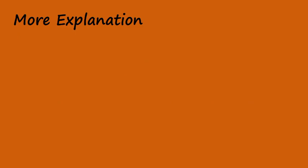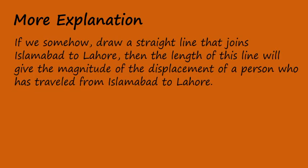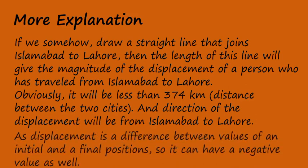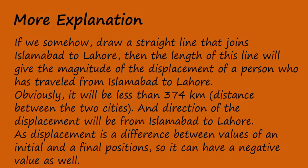More explanation. If we somehow draw a straight line that joins Islamabad to Lahore, then the length of this line will give the magnitude of the displacement of a person who has travelled from Islamabad to Lahore. Obviously, it will be less than 374 km, which is the distance between the two cities. And the direction of the displacement will be from Islamabad to Lahore. As displacement is a difference between values of an initial and a final position, it can have a negative value as well.